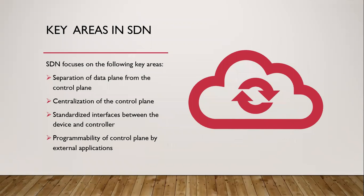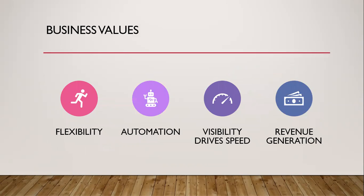The key areas in SDN are: separating the data plane from the control plane, centralization of the control plane, standardized interfaces between the device and the controller like OpenFlow and REST — these are the protocols used between the SDN controller and the data plane — and programmability of the control plane by external applications. The SDN controller software runs on separate hardware, providing centralized access to the entire network. The business values are flexibility, automation, visibility, speed and revenue generation.